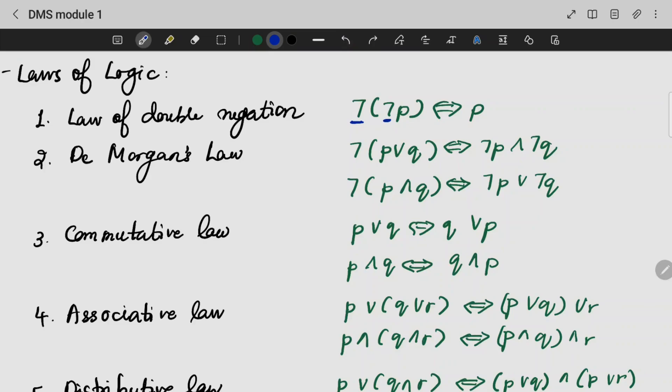De Morgan's law in this case, we will use a bracket and multiply. P will become not-P, and will become OR, and OR will become AND. Not-Q becomes not-R.